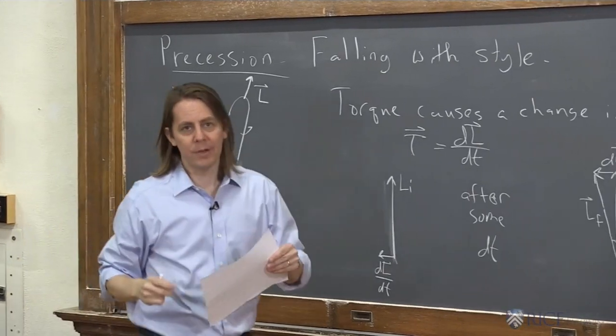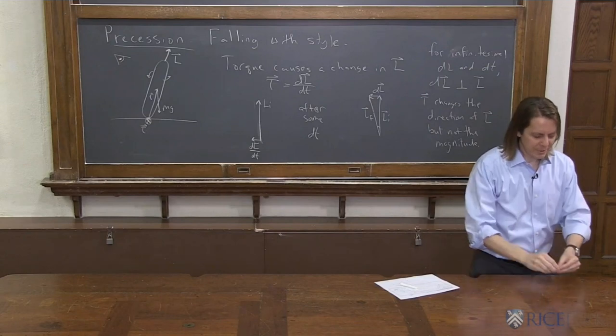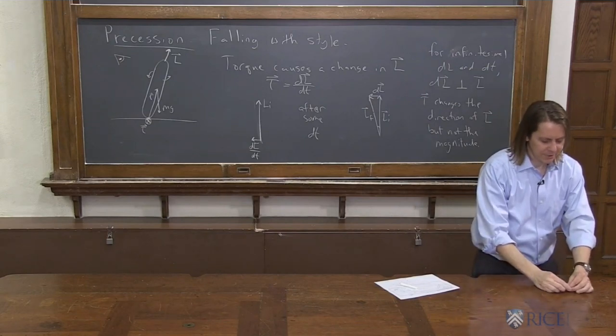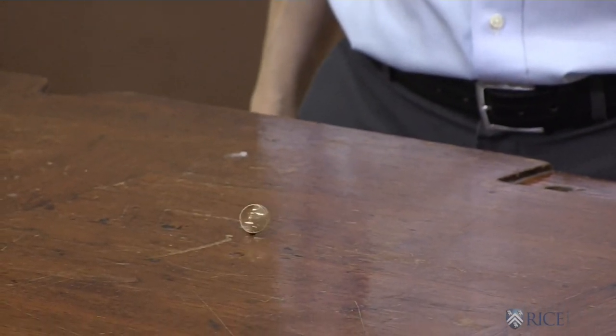And we can kind of see this when we spin our ring. So here we go. I'm going to take the ring, and when you spin it, sure enough, it doesn't fall as fast. But there's something else to notice. It's going in a circle.